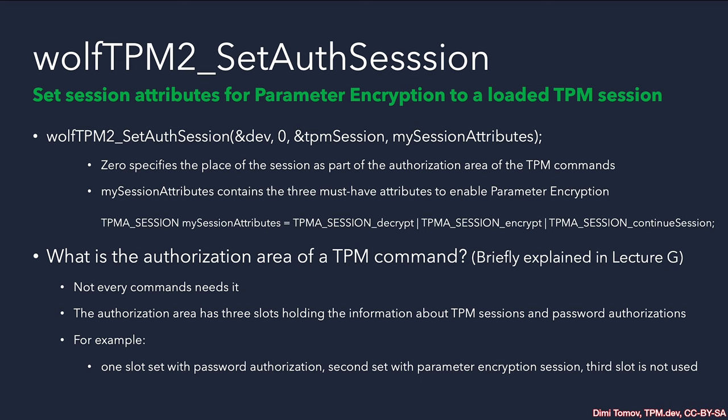The authorization area comes right after the mandatory fields, but it is optional and depends on the TPM tag. The authorization area has up to three slots. This is where we provide policy authorization, password authorization, or sessions for auditing and parameter encryption. For example, if a key was created with password authorization, we need to provide that in one slot; then if we want parameter encryption, we use the next slot for the HMAC session with the encrypt attribute set.